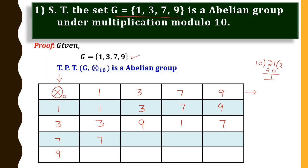7×1=7, 7×3=21 so remainder is 1, 7×7=49 so remainder is 9, 7×9=63 so remainder is 3. Now the last row: 9×1=9, 9×3=27 so remainder is 7, 9×7=63 so remainder is 3, and 9×9=81 so remainder is 1.